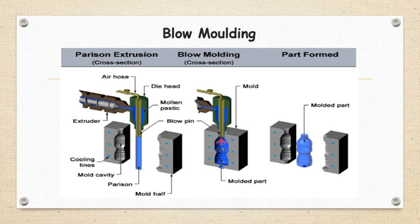The parison will get inflated due to that hot air and will take the shape of this cavity. The mold halves are then removed after cooling, and we will get a desired shape or molded part. So this blow molding process is a three-step process: in the first step we make the parison through extrusion, in the second step we blow hot air, and then we remove and form the part.